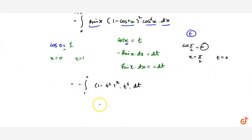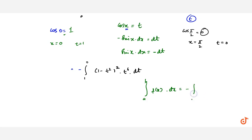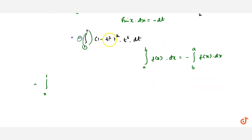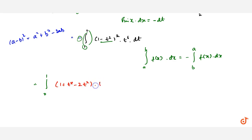We know that if we have limit a to b of f(x) dx, we can replace it with minus limit b to a of f(x) dx. Applying this, the limits become 0 to 1. We expand (1 minus t squared) whole squared as 1 plus t raised to power 4 minus 2t squared, multiplied by t raised to power 6 dt.